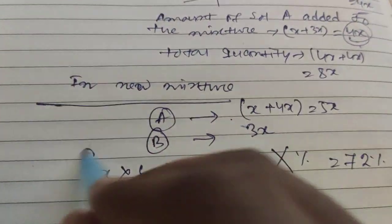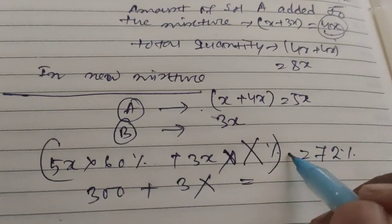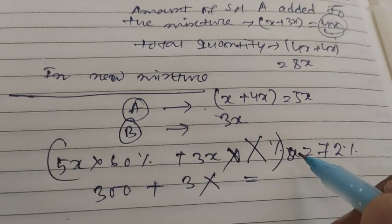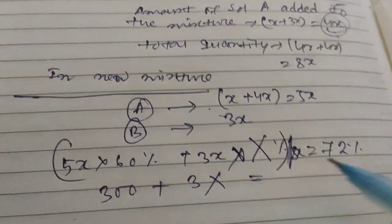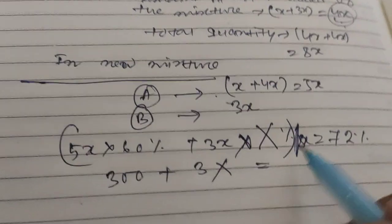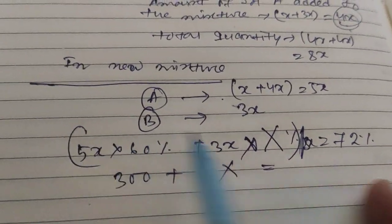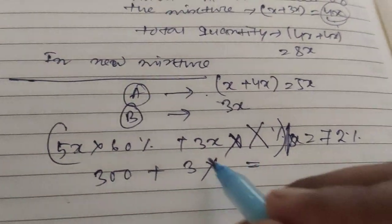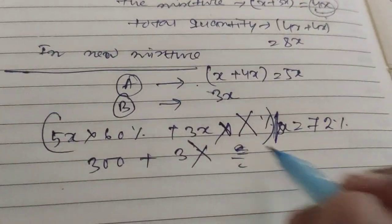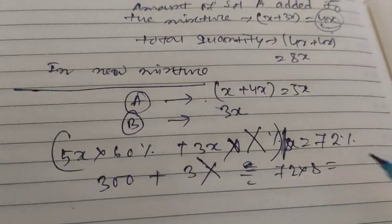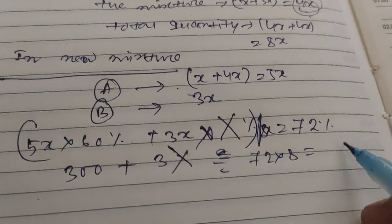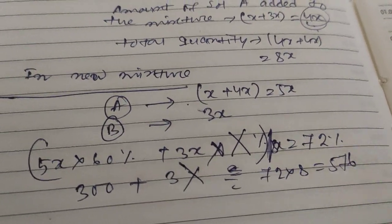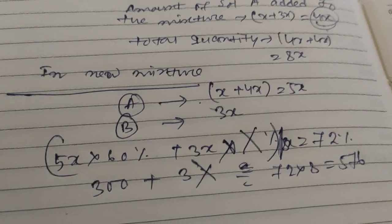Total is 8x, so dividing by 8x, the x will be cancelled out. So 300 plus 3 capital X equals 72 into 8, which is 576. So 3 capital X equals 276.